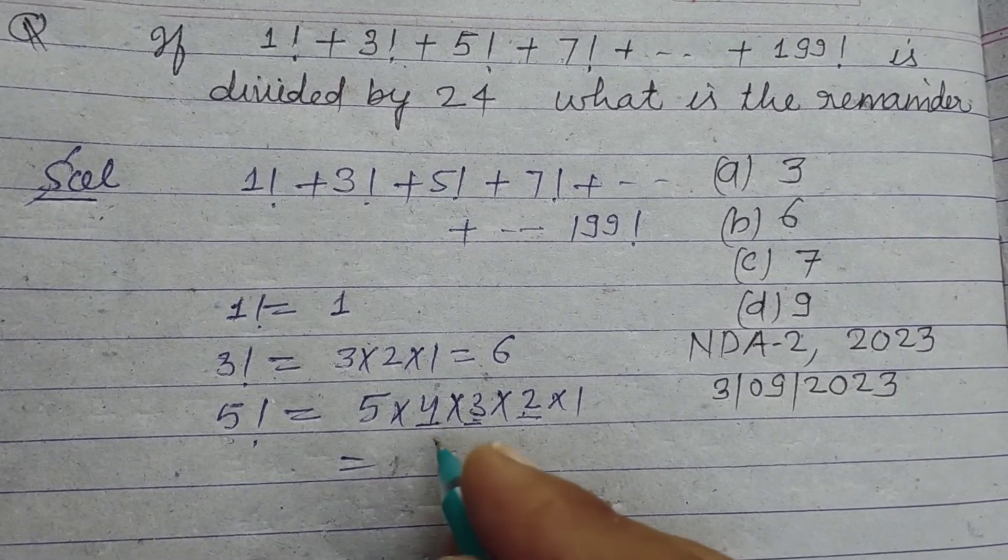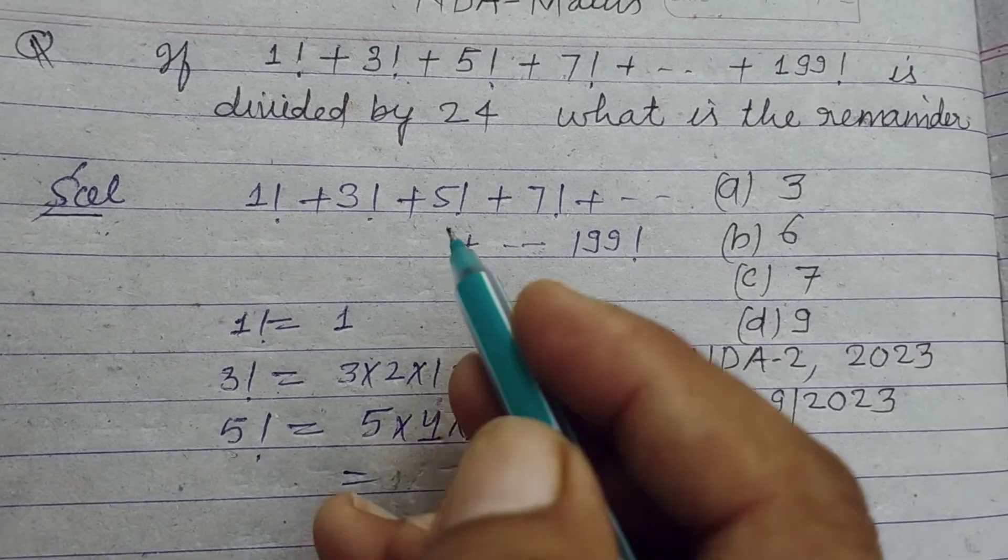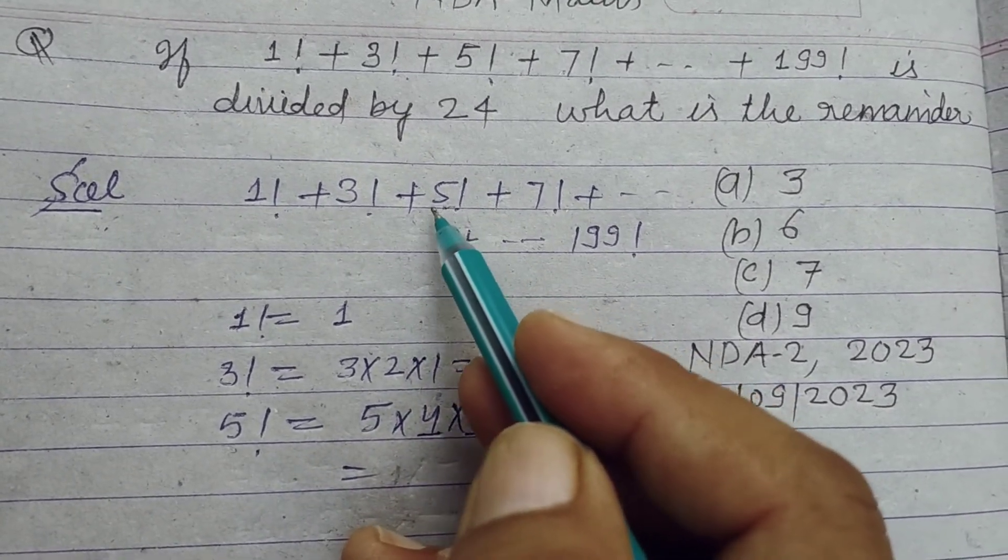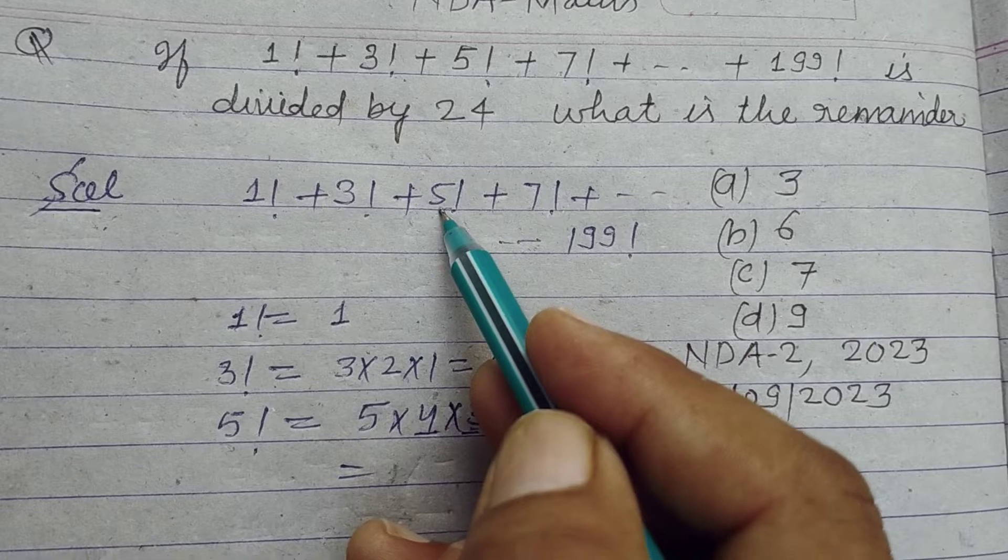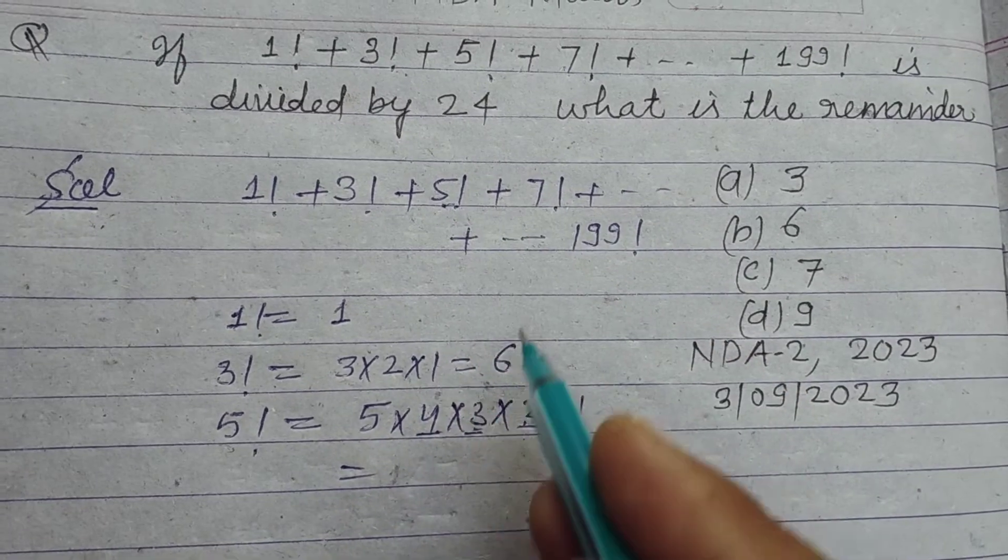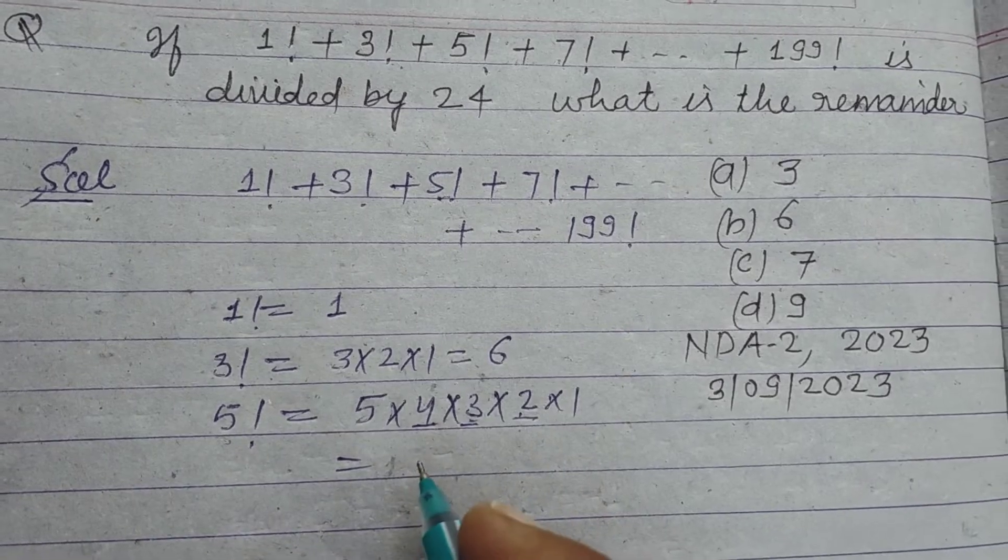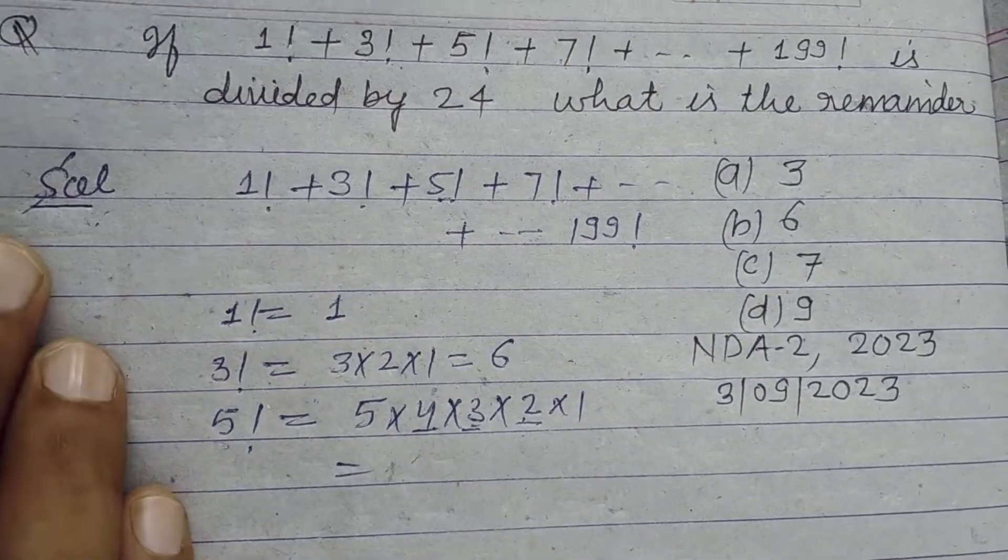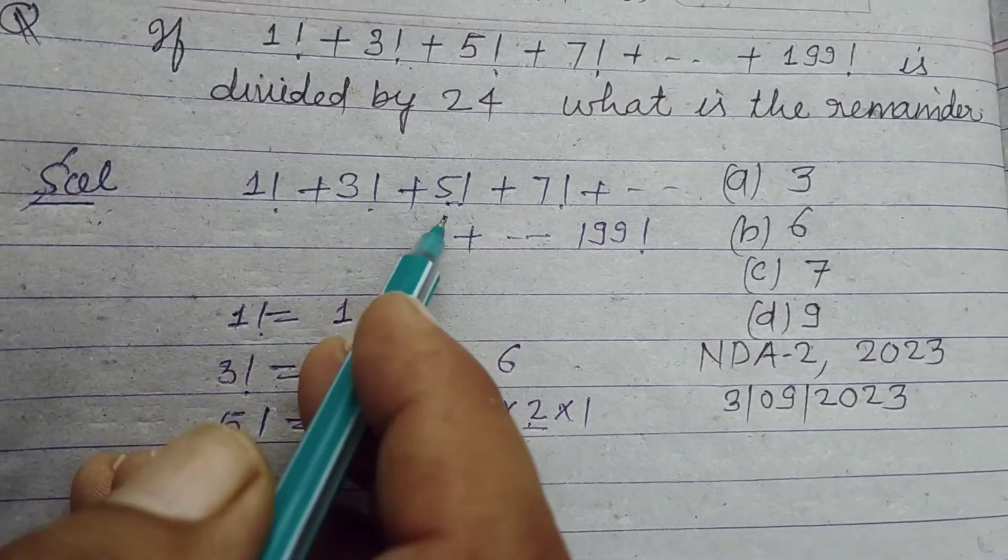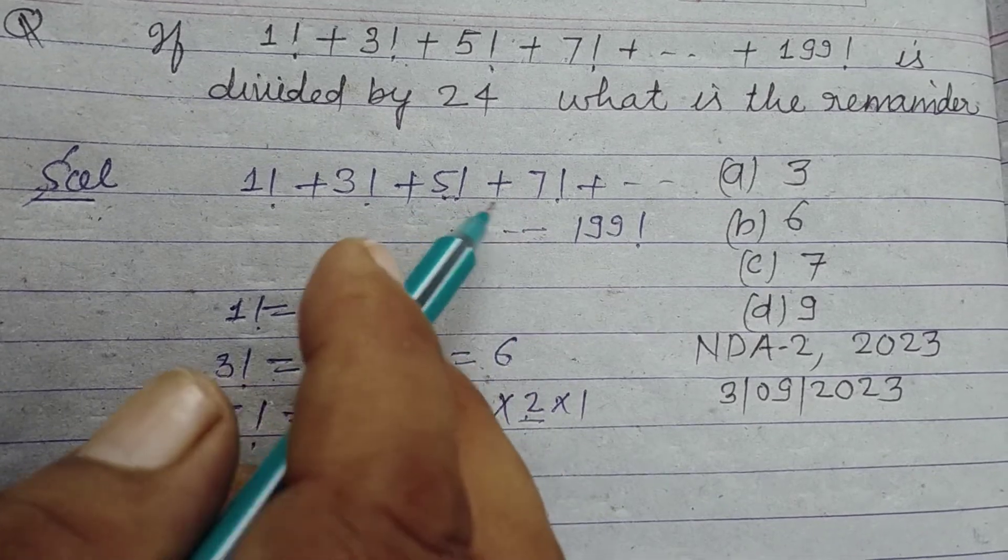5, 24 is available in all the steps, all the terms. So all terms with 5 factorial, 5 factorial, 7 up to 99 is divisible by 24.